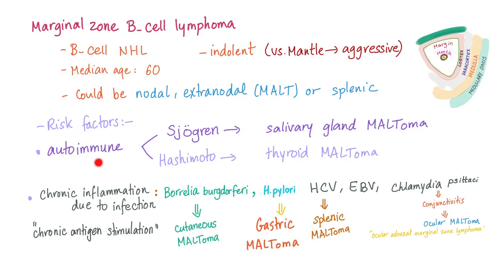Risk factors include autoimmune diseases such as Sjögren's syndrome, which can lead to salivary gland MALT lymphoma. Hashimoto's can lead to thyroid MALT lymphoma. Chronic inflammation due to infection: Borrelia burgdorferi can lead to cutaneous MALT lymphoma. H. pylori can lead to gastric MALT lymphoma. Hepatitis C virus can lead to splenic MALT lymphoma. Chlamydia psittaci can lead to conjunctivitis and subsequently ocular MALT lymphoma, also called ocular adnexal marginal zone lymphoma.